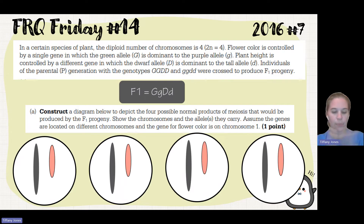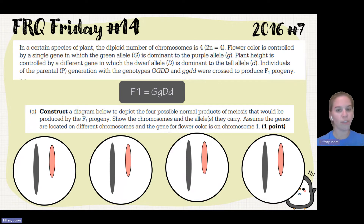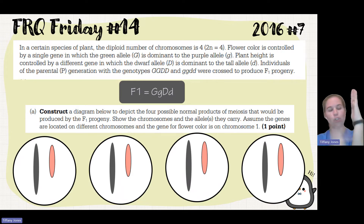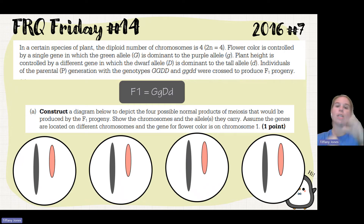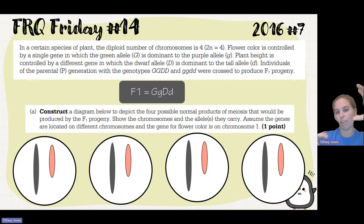During meiosis, we go through independent assortment. In terms of independent assortment, you could have the two dominant alleles on one side with the two recessive alleles, so when they segregate you end up with two dominants and two recessives. Or you can have the dominant allele for G on one side and the dominant allele for D on the other side, giving you a recessive and recessive combination. So you get four different combinations.